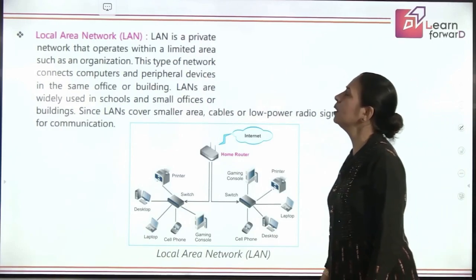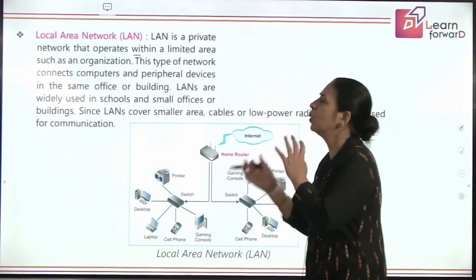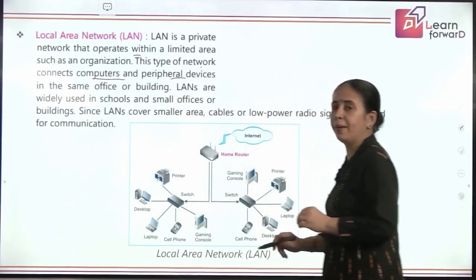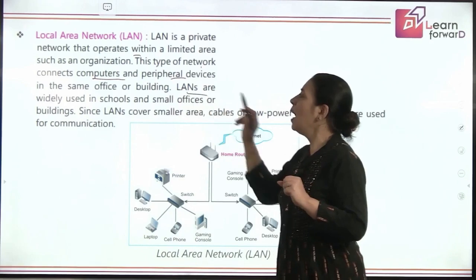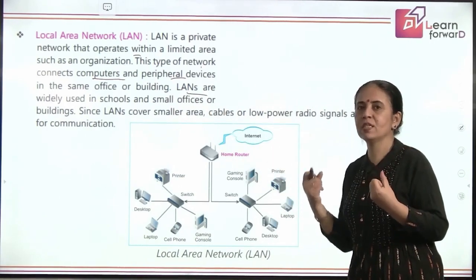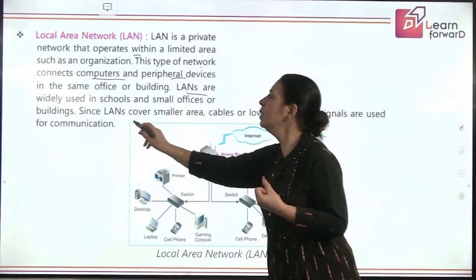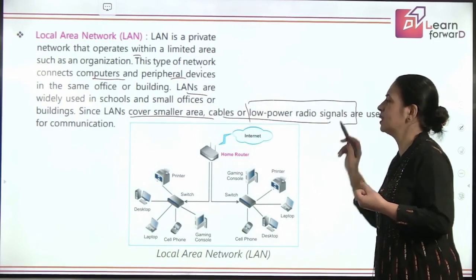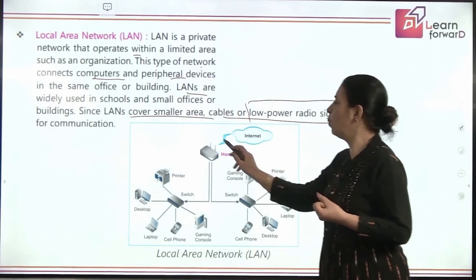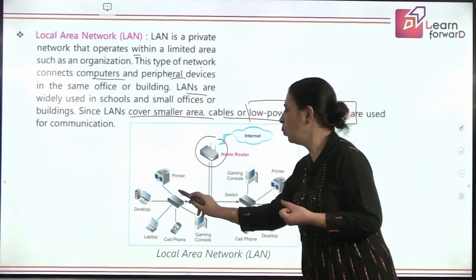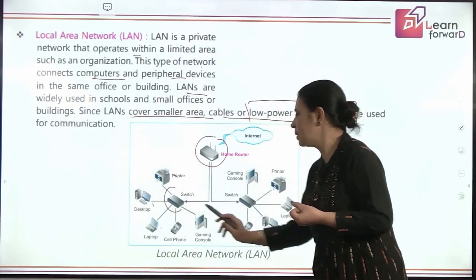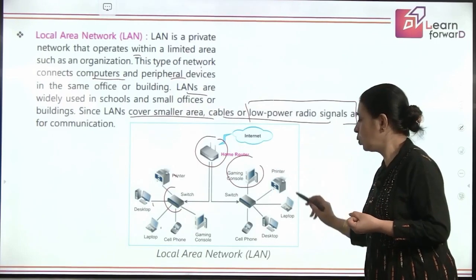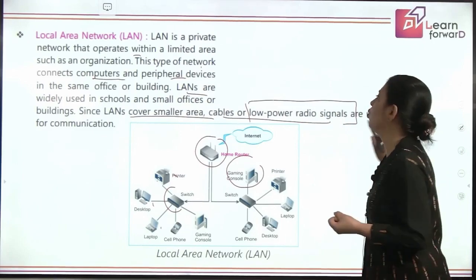Coming to Local Area Network (LAN), this is a private network that operates within an organization. It connects computers and different peripheral devices existing in the same building. LAN is widely used in small offices and schools, covering a small area. It is connected by cable or even low-power radio signals. For example, a home router connecting your printer, desktop, laptop, cell phone, gaming console, DVD, and LED — all connected to it.